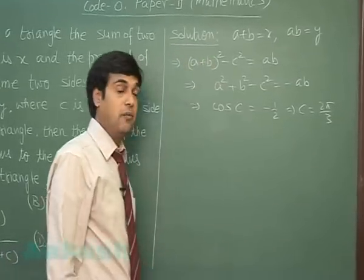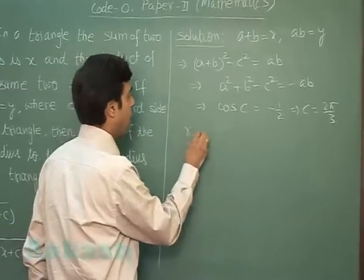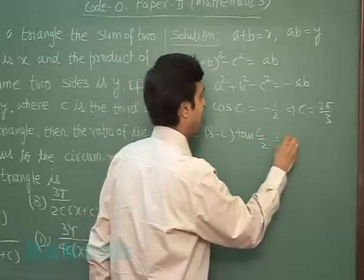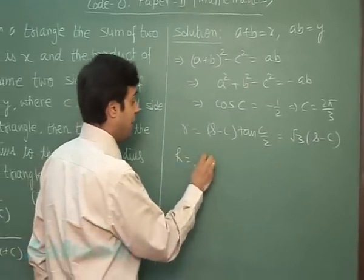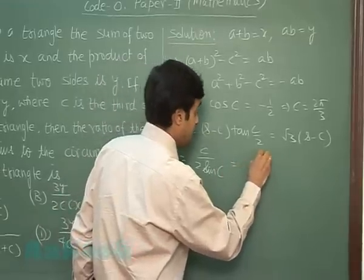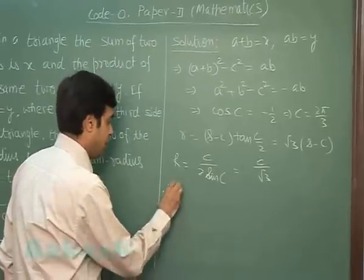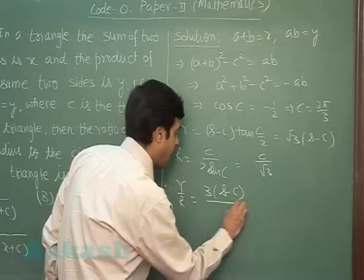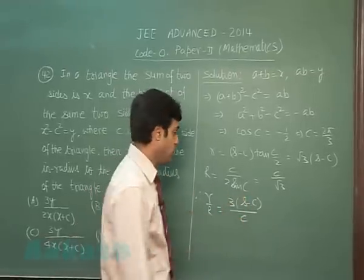Once we get angle C, we can easily obtain capital R and small r. Small r, that is s minus C tan C by 2, equals root 3 times s minus C, while capital R, that is C upon 2 sin C, equals C by root 3. Therefore, small r by capital R is 3 times s minus C upon C.